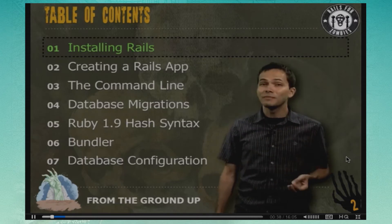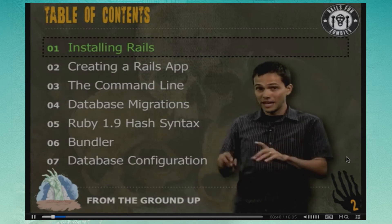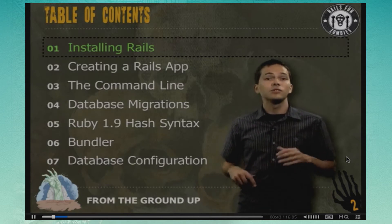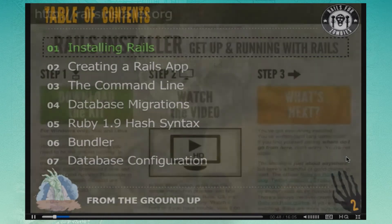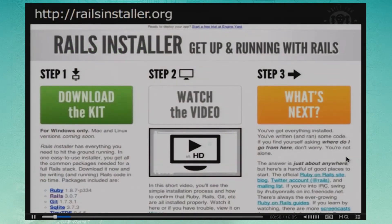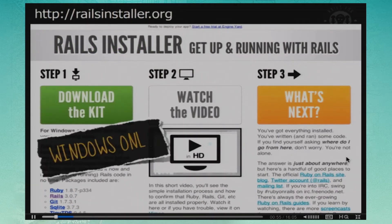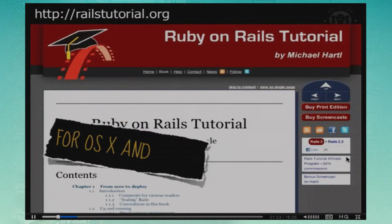If you haven't yet, I highly recommend getting Rails installed on your computer so you can run commands and follow along. I'm not going to go into the nitty-gritty of installing Rails on every platform — if you're on Windows head over to railsinstaller.org, there's a downloader and you'll be up and running in no time. If you're on OS X or Linux, head over to railstutorial.org and go through the first chapter — it'll get everything installed and you'll even get an application deployed on Heroku.